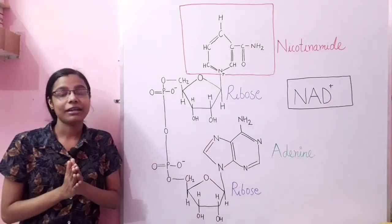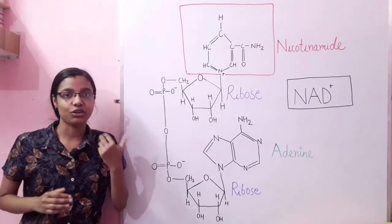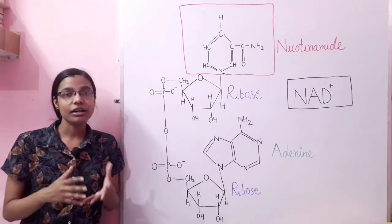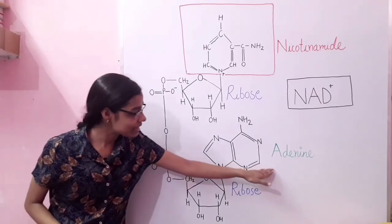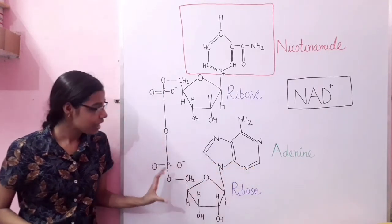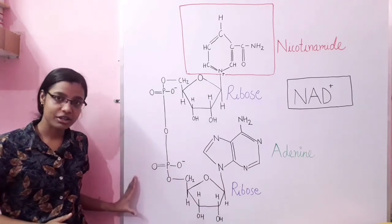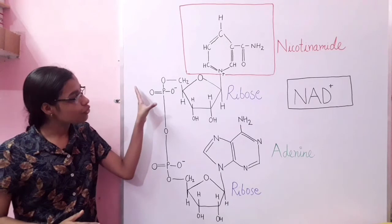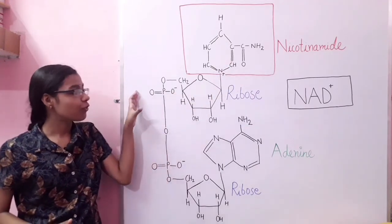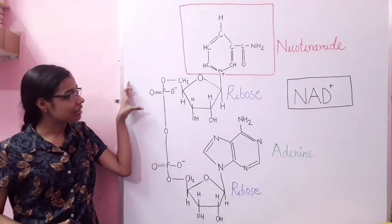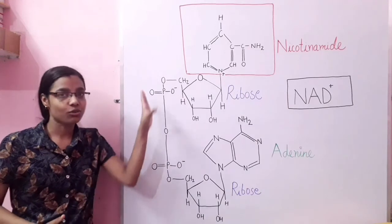It is called a dinucleotide because a nucleotide consists of a nitrogenous base, a sugar, and a phosphate group. Here, adenine is the nitrogenous base, along with a ribose sugar and a phosphate group — that is one nucleotide. The other portion is the nicotinamide ring attached to a ribose sugar and a phosphate group — that is the other nucleotide. So together it is a dinucleotide.